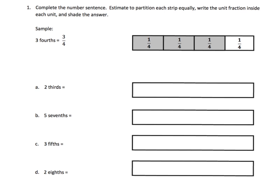So here, the directions say complete the number sentence and estimate to partition each strip equally. Estimate means we're going to try and cut things into equal pieces, but we're not going to be totally perfect. Teachers, parents, please don't give your kids rulers. It's just not that important. Let them estimate when they're cutting things into equal parts. And then write the unit fraction inside each unit and shade the answer.